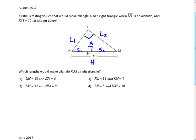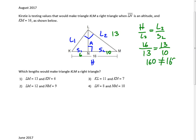Which lengths would make triangle KLM a right triangle? We just have to plug them in and test. For option 1, if LM is 13 and KN is 6, that would make side 2 equal to 10. We check: does hypotenuse over leg 2 equal leg 2 over side 2? Does 16 over 13 equal 13 over 10? Cross-multiplying gives 160, which does not equal 169. So that setup doesn't work for option 1.